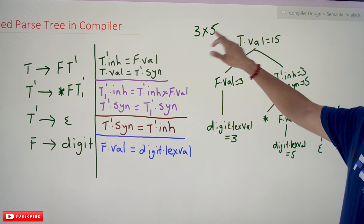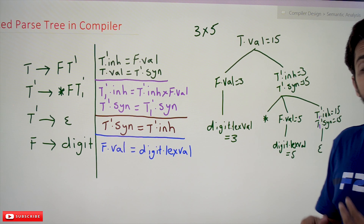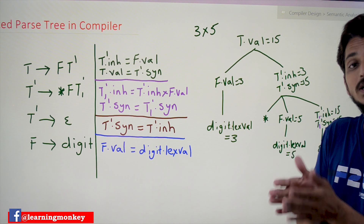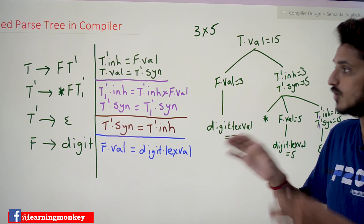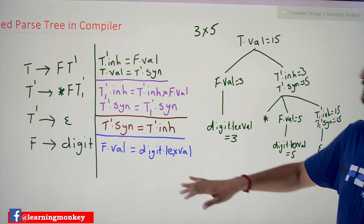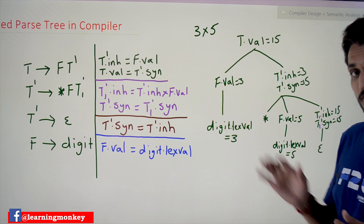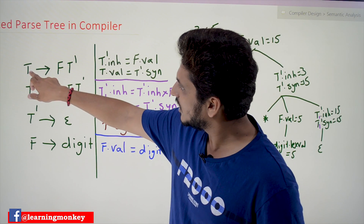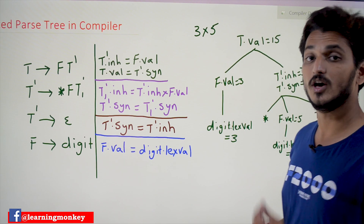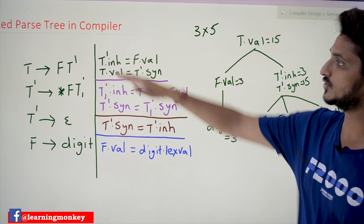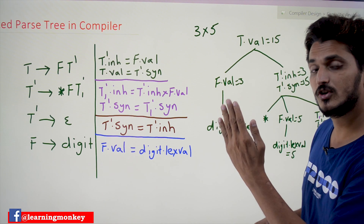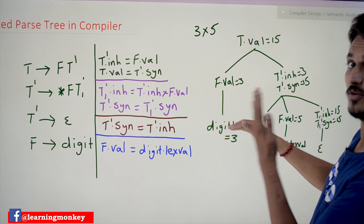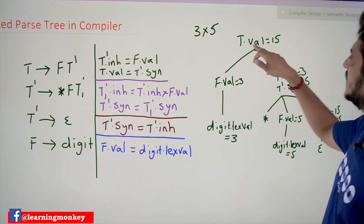For the 3 × 5 multiplication we are evaluating, the way it is going to evaluate is shown using the dependency graph, which we will understand in this class. One important point before going into the dependency graph: whenever you are elaborating T → F T', if you are using top-down parsing, this is going to go in top-down leftmost derivation, meaning it evaluates from top to bottom.